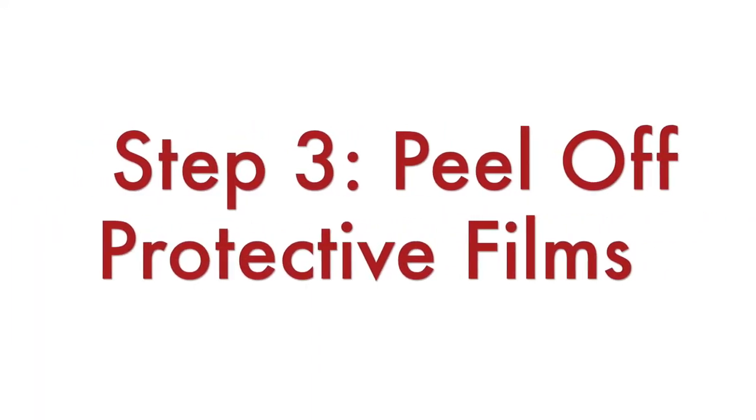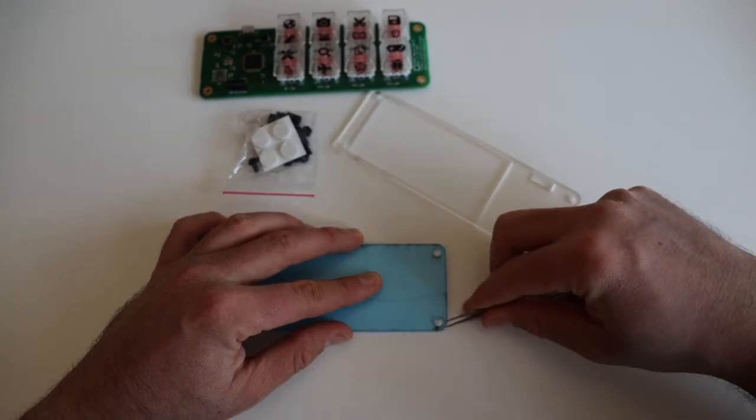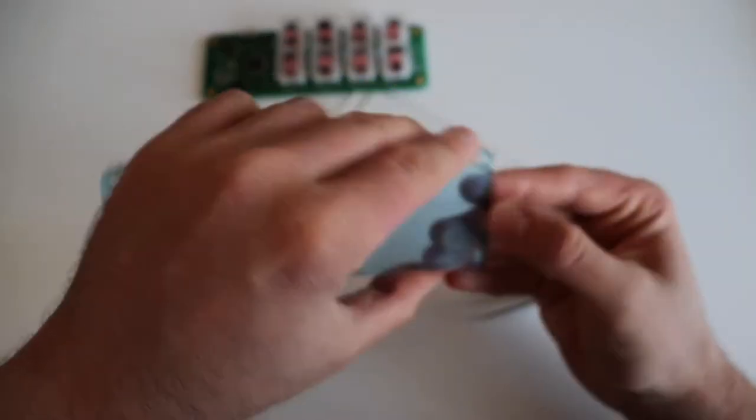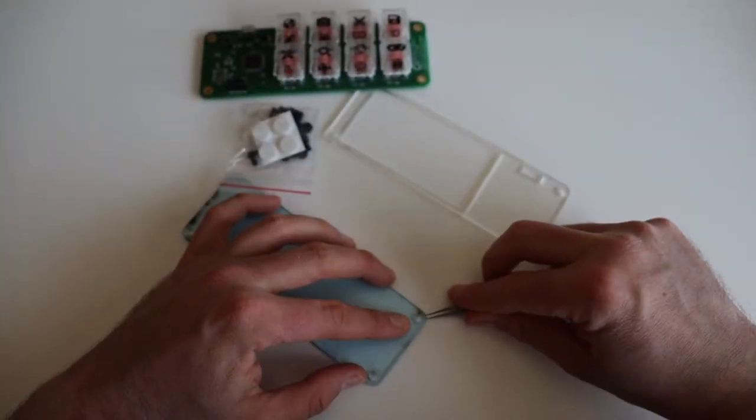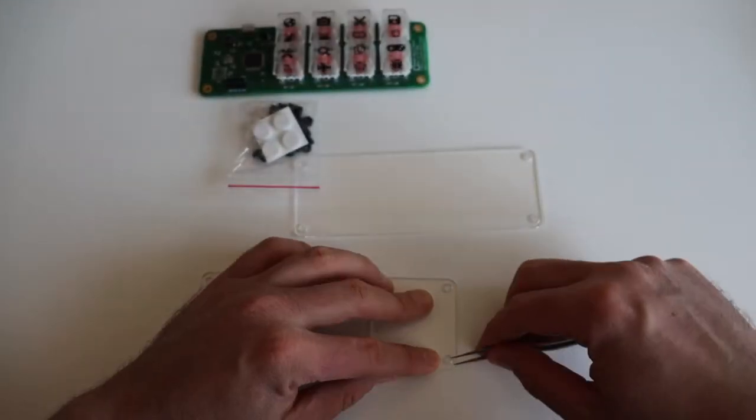Now, let's assemble the acrylic enclosure. Step number 3. Peel off the protective films from both sides of the two laser cut transparent acrylic parts. The removal of the protective films is quite annoying but once you get rid of them, the acrylic enclosure will be crystal clear and fully transparent.